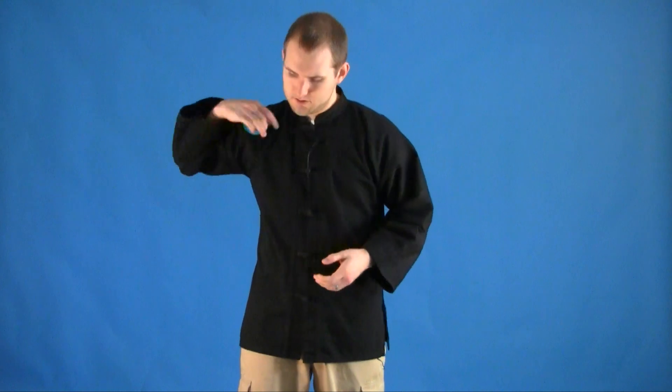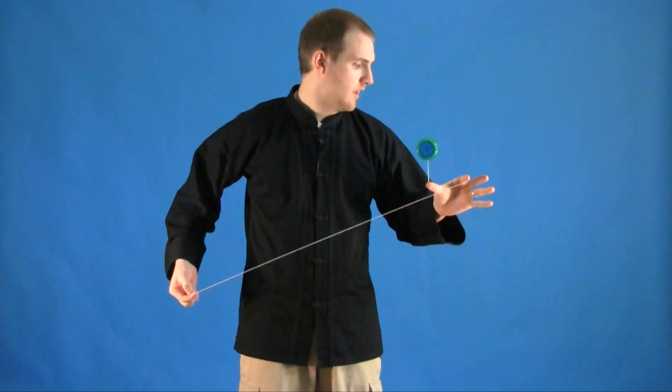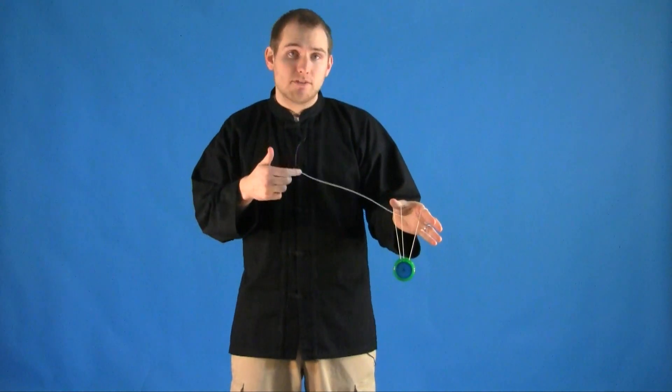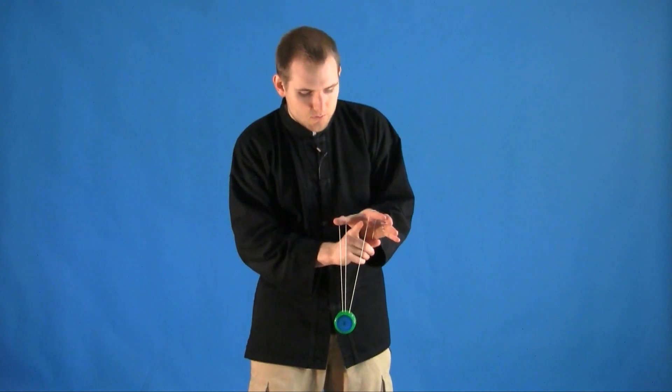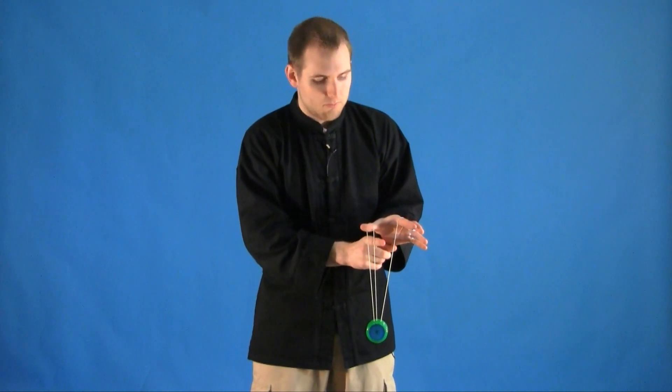So to do this trick you want to start by getting into your basic thumb mount. Land with the yoyo off of the string. That way we can stick our index finger in between our thumb and index finger that the yoyo is mounted over.